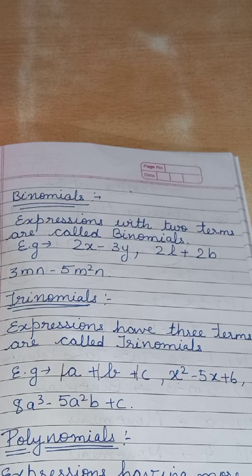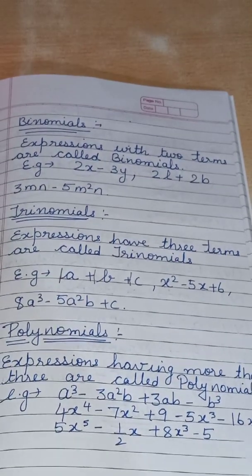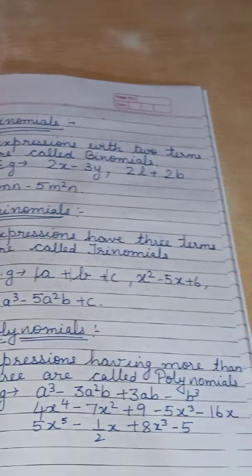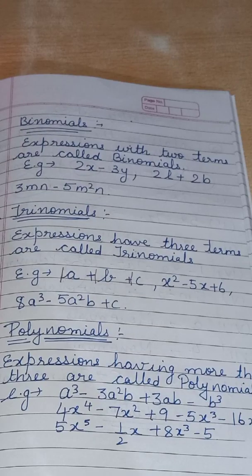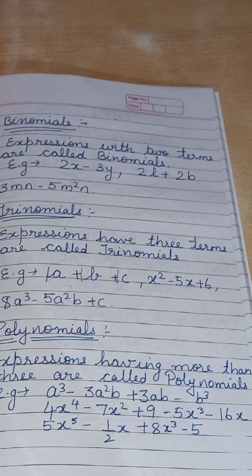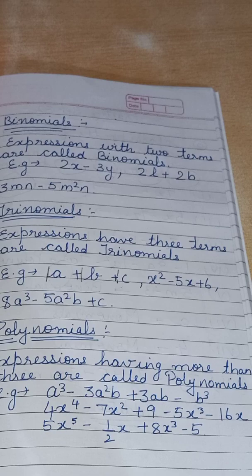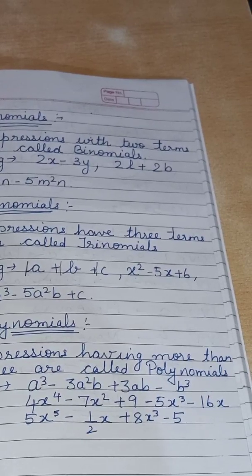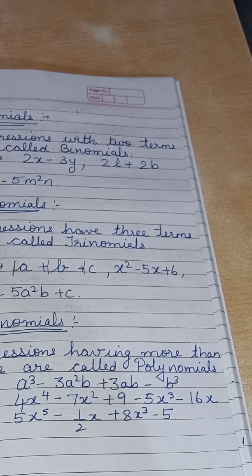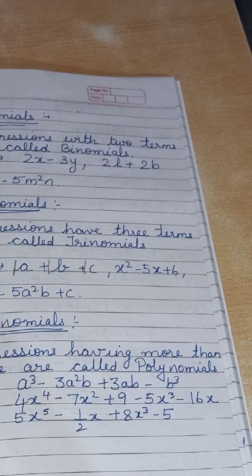Now come to polynomials. Polynomials means more than three terms. Expressions having more than three terms are called polynomial. Example: a³ minus 3a²b plus 3ab² minus b³ — four terms, so polynomial. Also 4x⁴ minus 7x² plus 9 minus 5x³ minus 16x — five terms, polynomial. And 5x⁵ minus 1/2 x plus 8x³ minus 5 — four terms, that is polynomial.